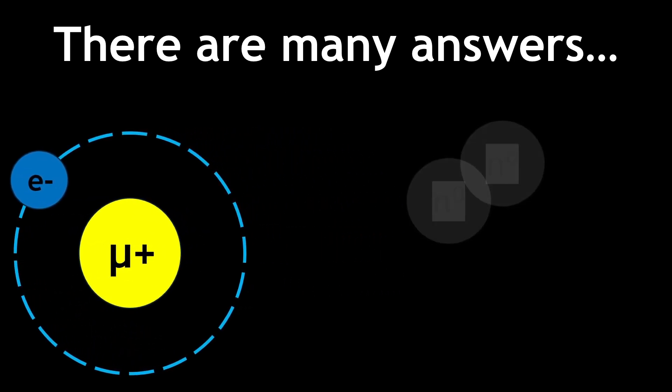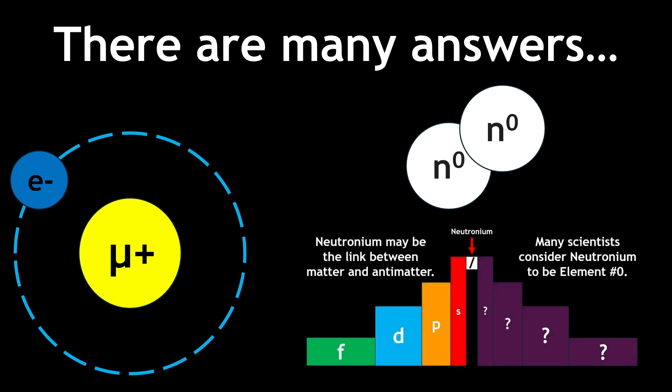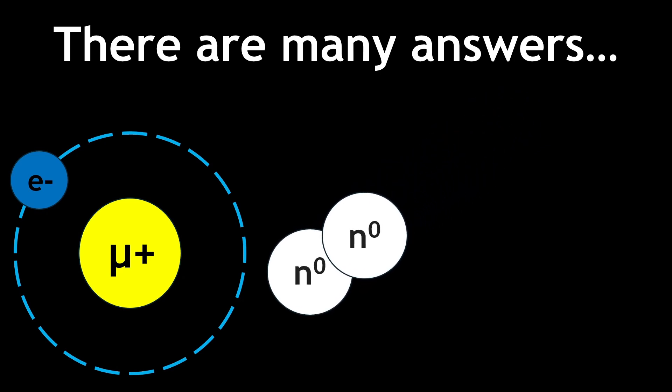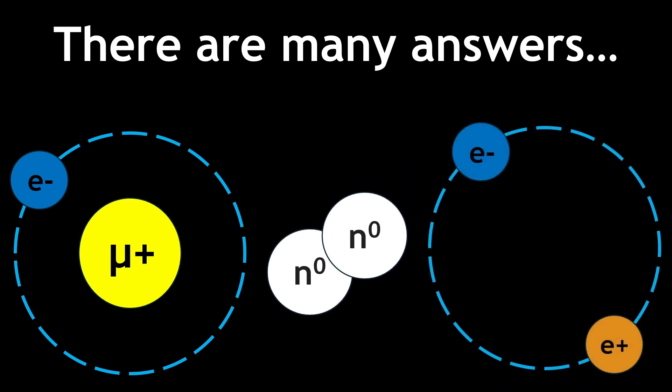Some scientists consider neutronium, consisting of only neutrons, as being the element zero that links the matter and antimatter periodic tables, as Charles Genet theorized. Others believe that positronium is the real element zero because of its lack of nuclear matter, along with its composition being equally matter and antimatter.